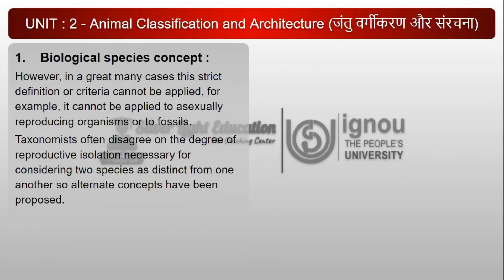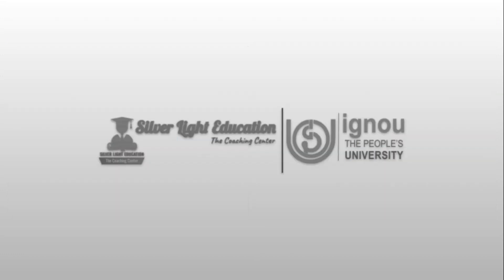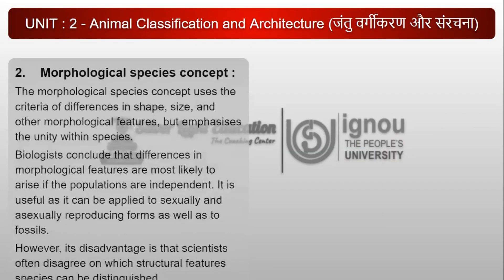However, in a great many cases this strict definition or criteria cannot be applied — for example, it cannot be applied to asexually reproducing organisms or to fossils. Taxonomists often disagree on the degree of reproductive isolation necessary for considering two species as distinct from one another, so alternate concepts have been proposed. परंतु अनेक मामलों में यह परिभाषा लागू नहीं होती, जैसे अलैंगिक रूप से जनन करने वाले जीवों या जीवाश्मों पर। वर्गिकी विज्ञानी अक्सर दो स्पीशीज को एक दूसरे से भिन्न मानने के लिए आवश्यक जनन पृथक्करण की मात्रा पर असहमत होते हैं, अतः वैकल्पिक संकल्पनाएं प्रस्तुत की गई हैं।